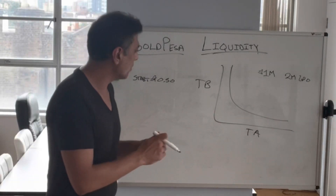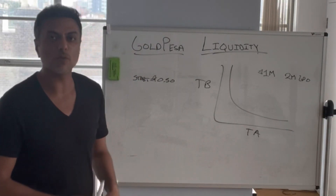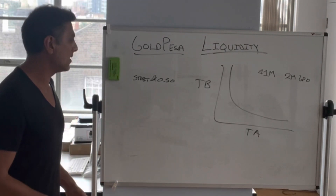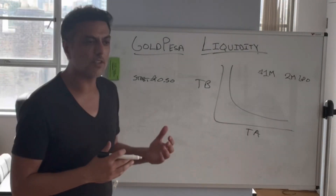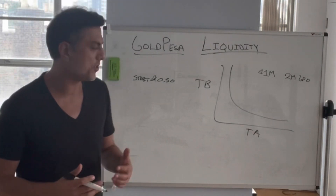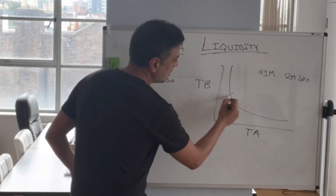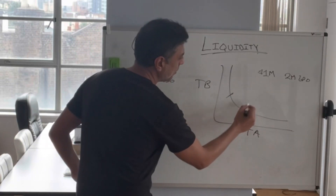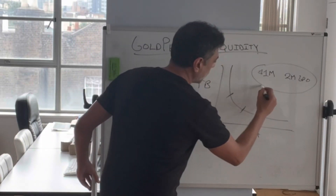So what you end up doing — and what's happened now with Uniswap version 3 that has made this so much easier and so much more intelligent — is that they allow you to define a range to place your liquidity.